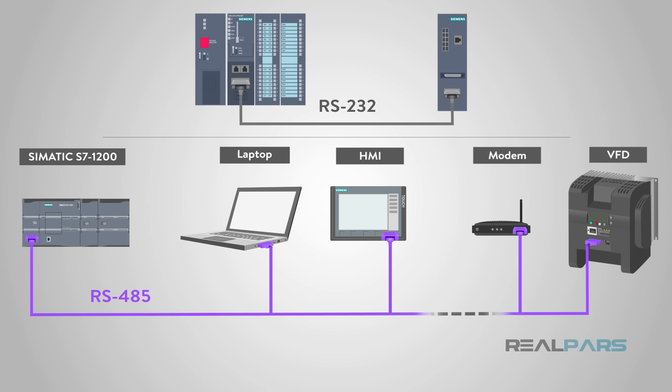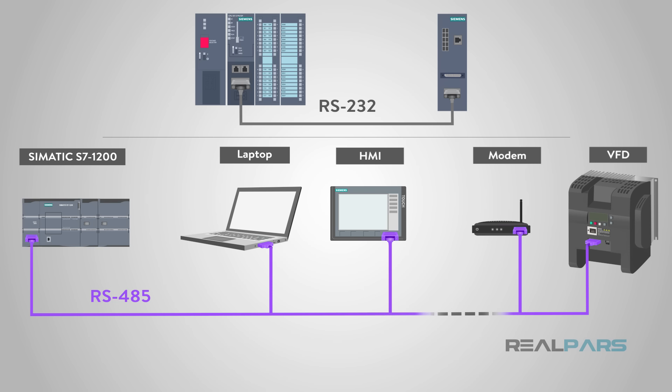Another advantage over RS-232 that I mentioned earlier is the number of connectable devices. RS-485 can handle up to 32 connected devices, while RS-232 could only handle one. This allowed users and manufacturing facilities to connect larger applications and whole machines with one protocol.